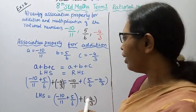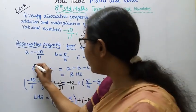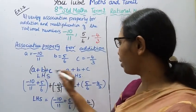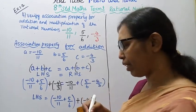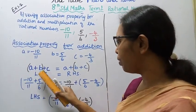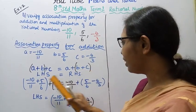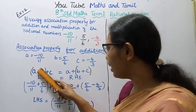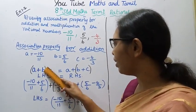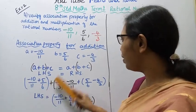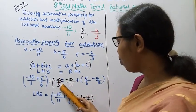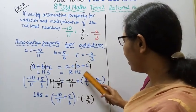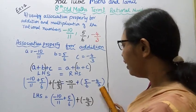This is easy to verify. For the left hand side, first take the last two in a bracket. Left hand side: minus 10 by 11 plus bracket 5 by 6 plus minus 4 by 3.